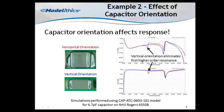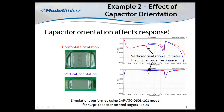In this example, the effect of capacitor orientation is shown. Notice that the horizontal orientation, shown in red, has an additional higher-order resonance when compared to the vertical orientation, shown in blue. Capturing this characteristic may be important to design optimization.